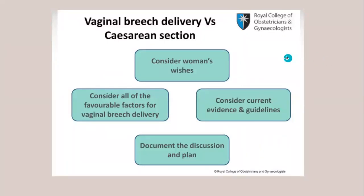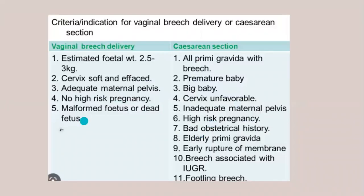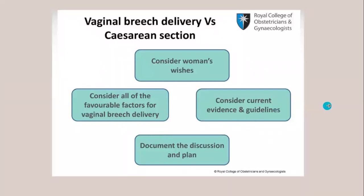After ECV, the other options are vaginal breech birth and cesarean section. When counseling a patient who has refused ECV and wants vaginal breech birth, you need to assess the woman's wishes and enumerate the options. You should consider all favorable factors for vaginal breech birth, current evidence, and guidelines. Documentation of the discussion and plan is very important — each conversation should be part of the women's notes. This addresses litigation issues and demonstrates that you are a safe doctor who acts according to the patient's wishes.